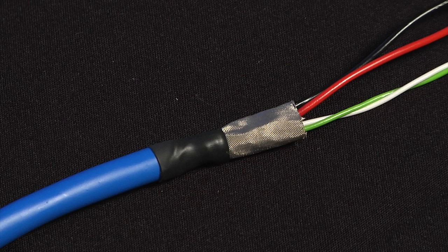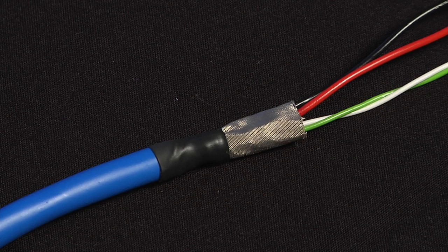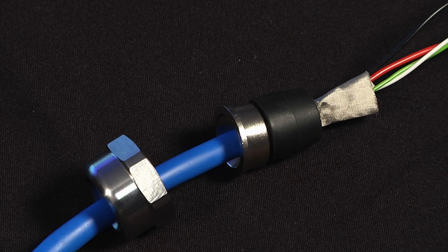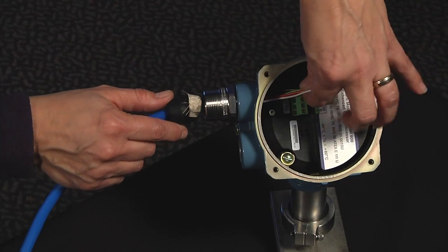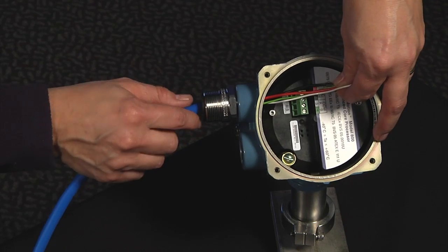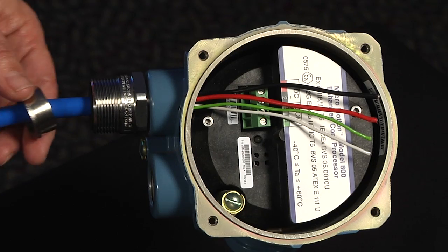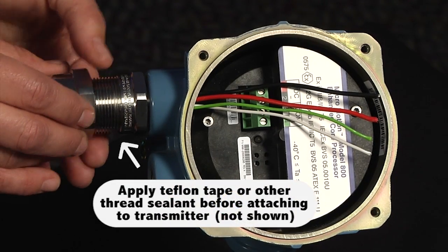Now you are ready to put the gland together and attach it to the device. To do this, slide the gland insert piece or pieces up to the beginning of the shield and then fold the shield back over the insert. Feed the wires through the conduit opening and push the insert all the way into the gland body. Bring up the gland nut and screw it down tightly.